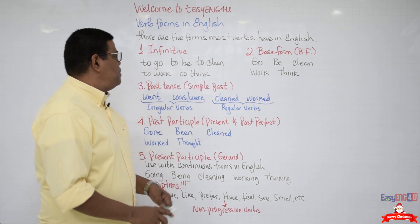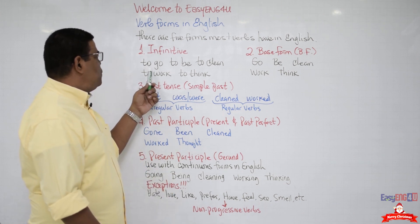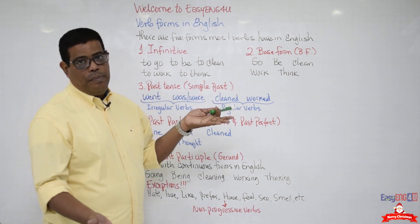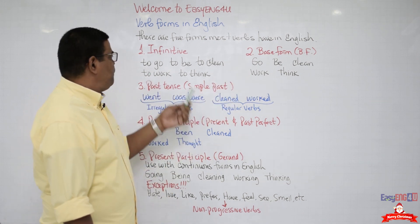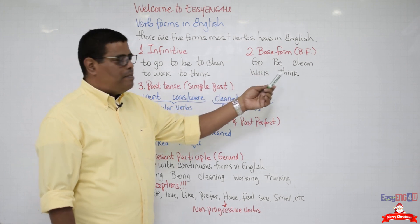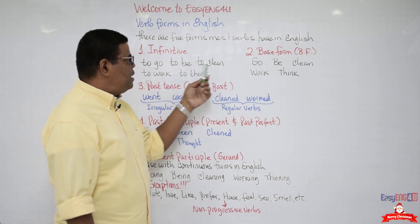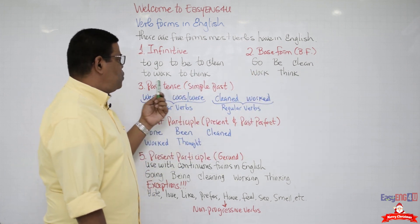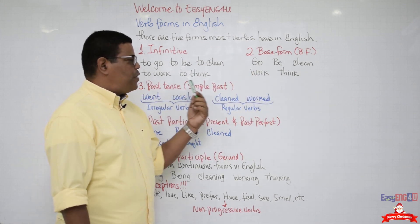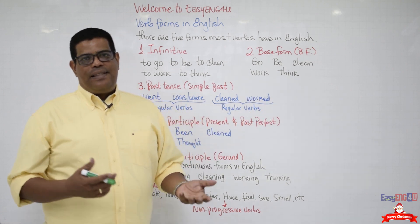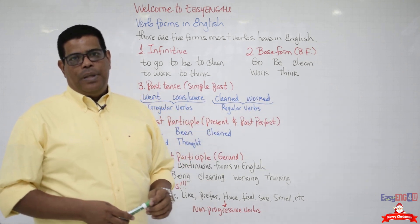In other words: 'to go' — infinitive; 'go' — base form. 'To be' — 'be'. 'To clean' — 'clean'. 'To work' — 'work'. 'To think' — 'think'. That's the base form.